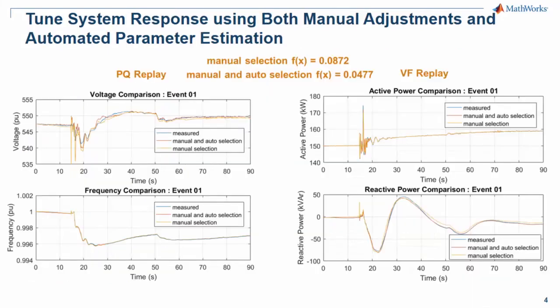Following manual adjustment and automated parameter sensitivity, automated parameter estimation can be applied to fine-tune the response. In this stage, we have observed that solution convergence, when you combine both PQ replay and VF replay, is more robust and accurate than separate PQ replay or VF replay. Parameter value ranges can be constrained in the automated parameter estimation task.